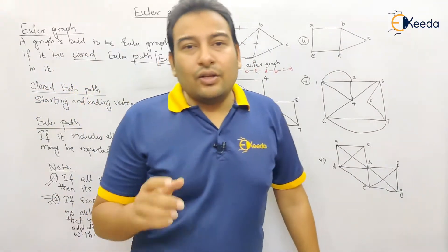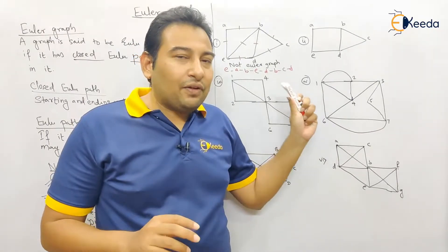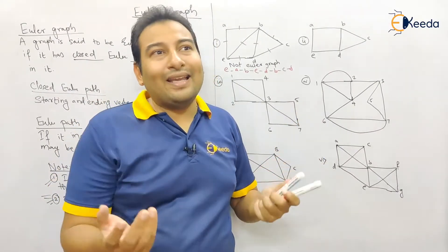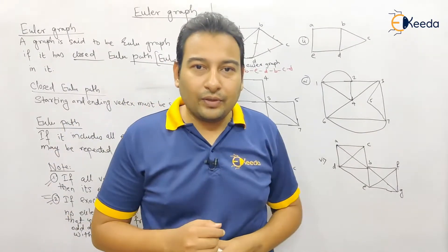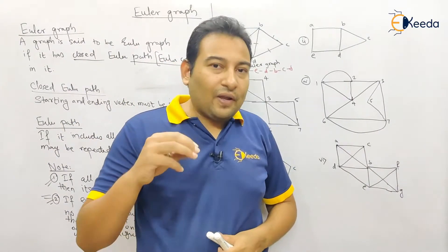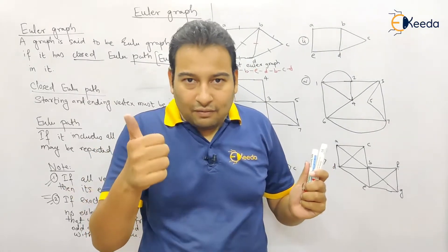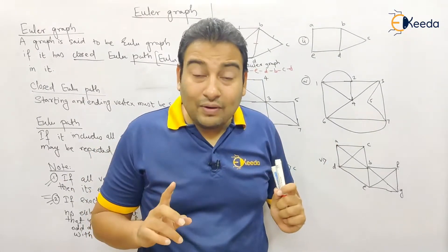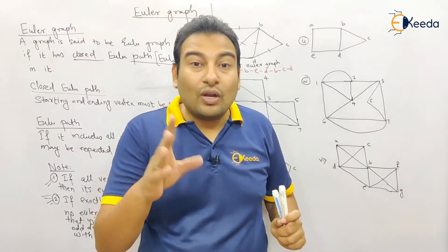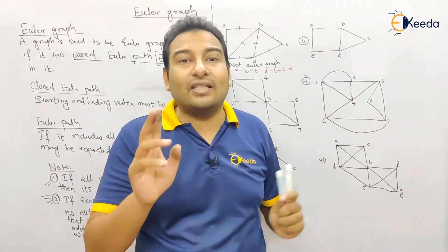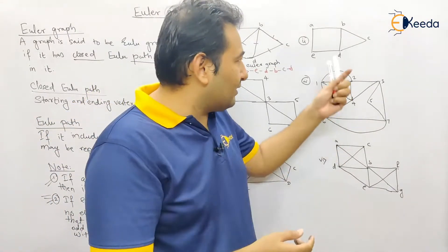Now, what if a graph has three vertices with odd degree? If there are three vertices with odd degree, it will not be an Euler graph — since at least one vertex has odd degree — and there will also be no Euler path, because an Euler path exists only when exactly two vertices have odd degree.